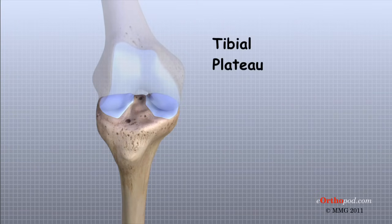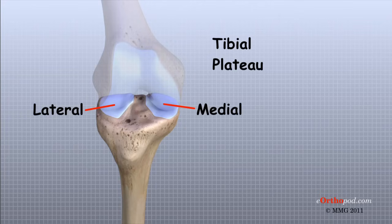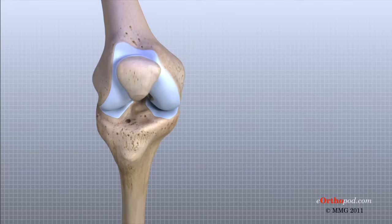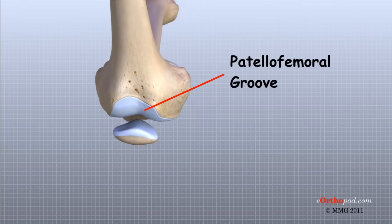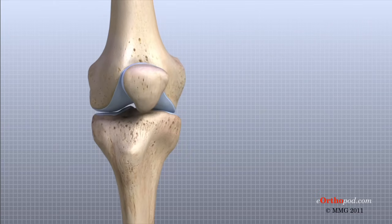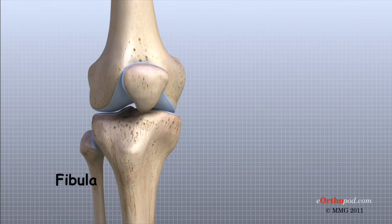The outside half, farthest away from the other knee, is called the lateral tibial plateau. The inside half, closest to the other knee, is called the medial tibial plateau. The patella glides through a special groove formed by the two femoral condyles called the patellofemoral groove. The smaller bone of the lower leg, the fibula, never really enters the knee joint. It has a small joint that connects it to the side of the tibia, and this joint normally moves very little.